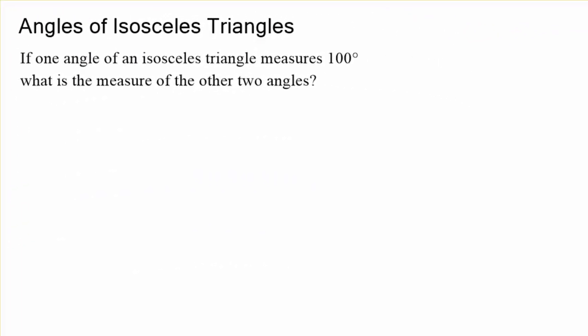Let's try again. You'll see a question like this on a test. If one angle of an isosceles triangle measures 100 degrees, what is the measure of the other two angles? Now they don't tell us if the 100 degrees is a vertex angle or the base angles. Could they be the base angles, 100 and 100?